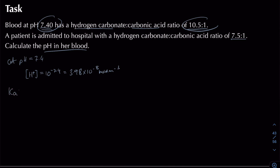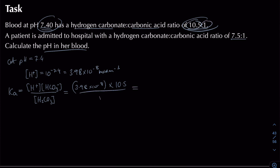Using Ka = [H+][HCO₃⁻] / [H₂CO₃], substitute [H+] = 3.98 × 10⁻⁸, and the ratio 10.5 : 1 so [HCO₃⁻] = 10.5 and [H₂CO₃] = 1. This gives Ka = 3.98 × 10⁻⁸ × 10.5 / 1 = 4.18 × 10⁻⁷.